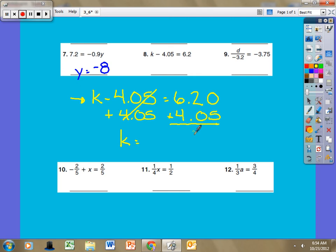k is equal to, let's see here, starting in the hundredths place, that is five, tenths place, that is two, six plus four is ten. I have solved that k is equal to 10.25. I can substitute that in to make sure.